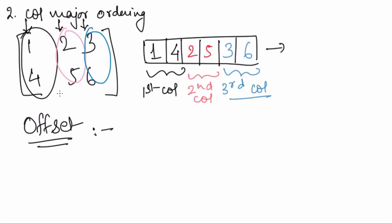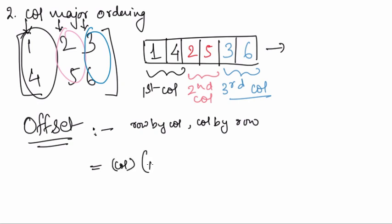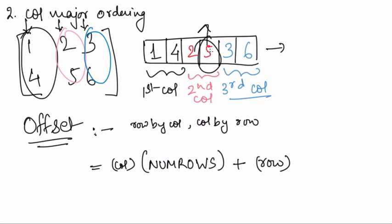For calculating the offset for column major ordering, if you remember the offset formula for row major ordering, you just need to replace row by column and column by row. So the offset for column major ordering equals the column where that element lies, multiplied by the total number of rows in the two dimensional array, plus the row where that element lies. Now if I had to find where element 5 is located, and numbered up manually: 1, 2, 3, 4 and 5.